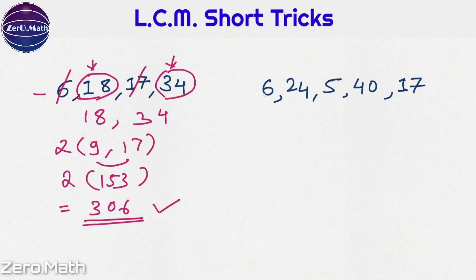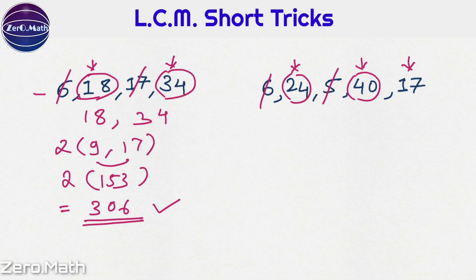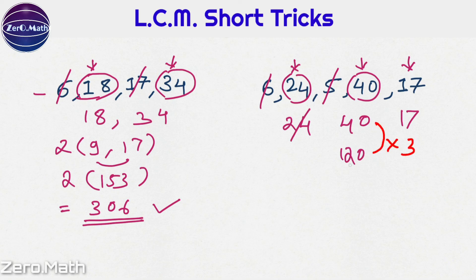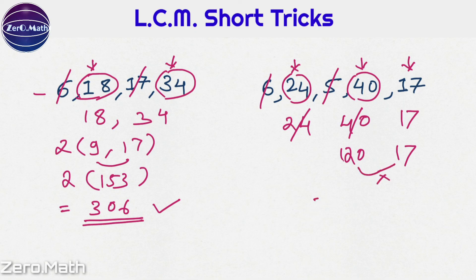Let us solve the next one in a similar way. The largest number is 40. It is divisible by 5 — cancel it out. It is not divisible by the rest. The second largest number is 24, which is divisible by 6 — cancel 6 out. Now, 17 is the next number and it is prime. So we consider 24, 40, and 17. To resolve 24 and 40: 40 × 2 = 80 — not divisible by 24; 40 × 3 = 120 — yes, 120 is divisible by 24. So the LCM of 40 and 24 is 120. Since 17 is prime, simply multiply: 120 × 17 = 2040, which is our answer.